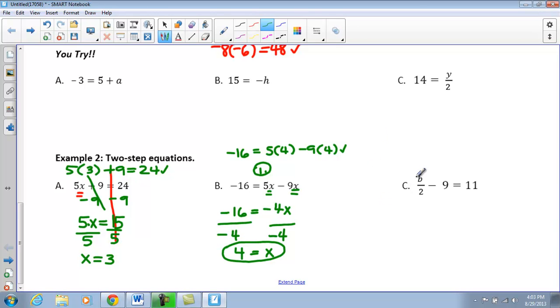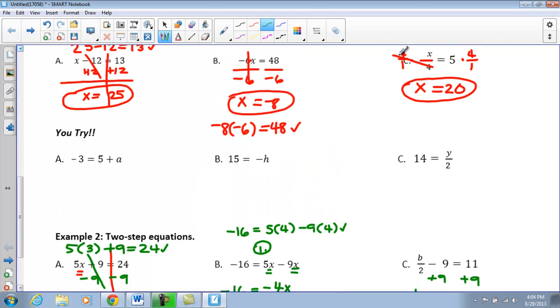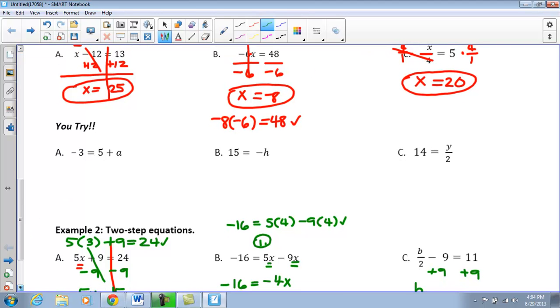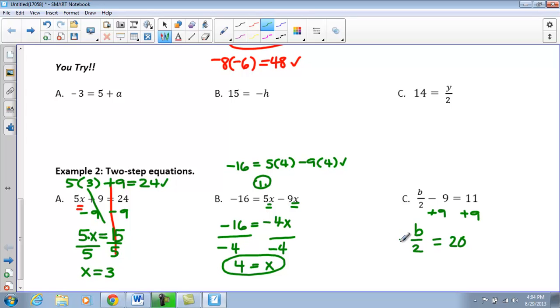Alright, our last example, we are going to add 9 as our first step to both sides. So I have b over 2 equals 20. Now remember, if we go back up to that first section, example C, we're again going to, so if we look back to here, to get rid of that division, we're going to multiply by its reciprocal. So I'm going to multiply by 2 over 1. So I'm going to multiply the other side by 2 over 1. So I have b is equal to 40. Go ahead and check that in your calculator and make sure that is a solution. And it does in fact check out.